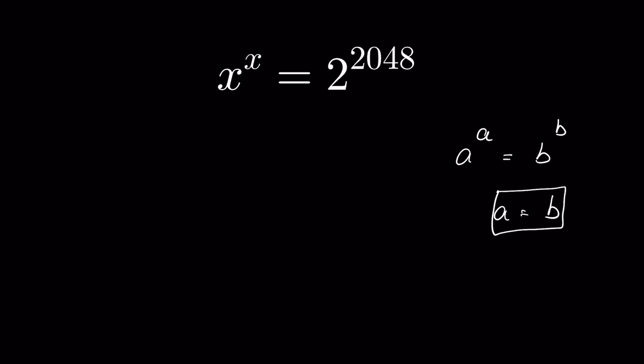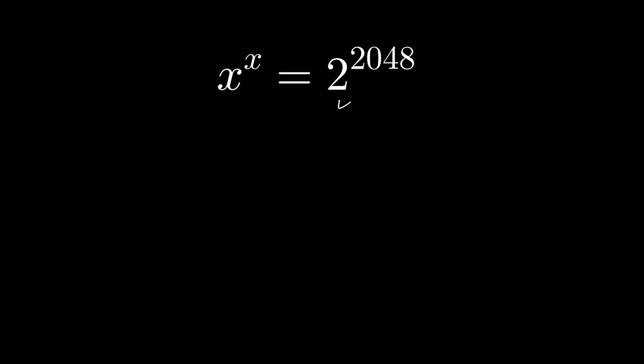So, if we can bring 2 to the power 2048 in the format of b to the power b, then we can find the value of x. Now, 2 to the power 2048, we can write it as 2 to the power 2 times 1024.